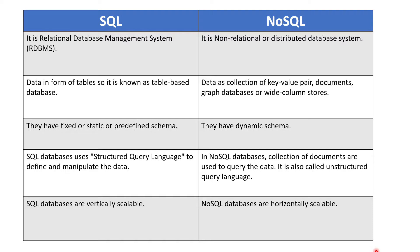The first difference is that SQL databases are Relational Database Management Systems (RDBMS), while NoSQL databases are non-relational or distributed database systems. In a relational database, data items are related to each other, and relationships are represented by tables with columns and rows. In non-relational databases, there is no concept of relations or tables.